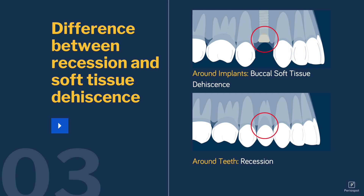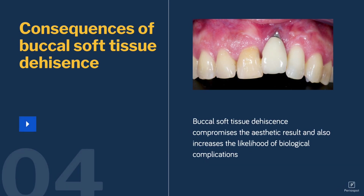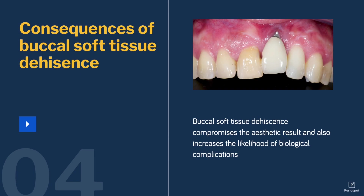When we have a soft tissue dehiscence around an implant, there is a consequence. The first consequence is an aesthetic failure of the case. But of course, with time this is going to come with other biological complications like peri-implantitis and other complications that can bring problems to the patient, and we have to somehow solve these situations.